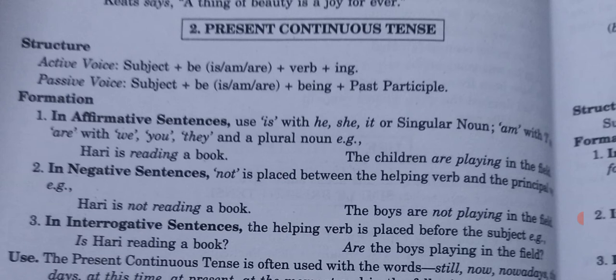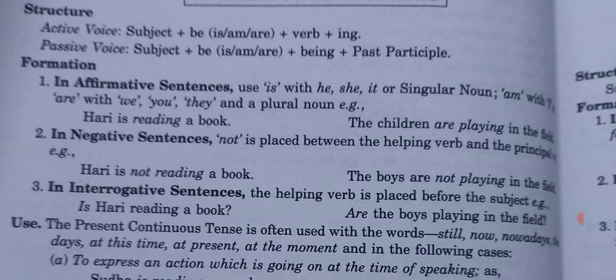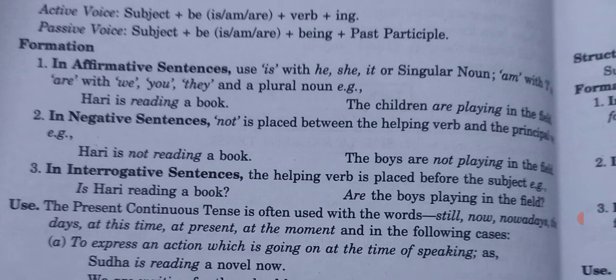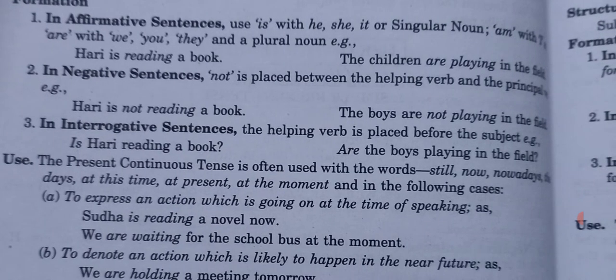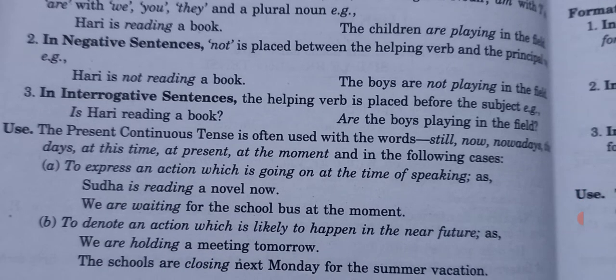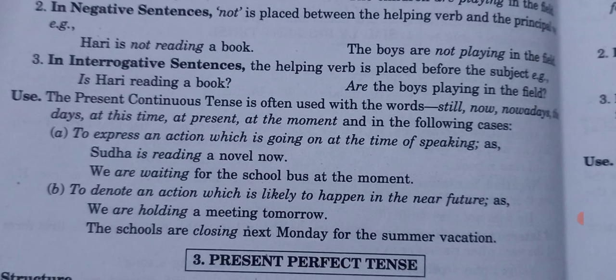In passive voice, the tense stays the same — is/am/are plus being plus past participle. In affirmative sentences, use is with he/she/it or singular nouns, am with I, and are with we/you/they and plural nouns. Examples: 'Hari is reading a book'; 'The children are playing in the field.' In negative sentences, 'not' is placed between the helping verb and the main verb: 'Hari is not reading a book'; 'The boys are not playing in the field.' In interrogative sentences, the helping verb is placed before the subject: 'Is Hari reading a book?' 'Are the boys playing in the field?'